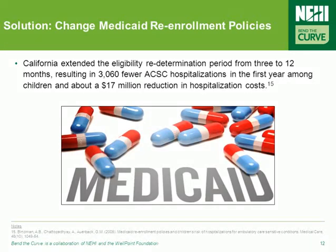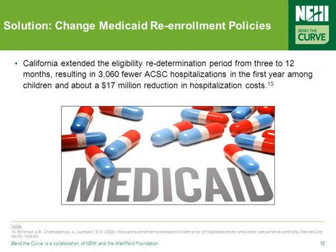A number of states have been making innovative changes to their Medicaid enrollment policies. California, for example, extended the eligibility redetermination period from 3 to 12 months, resulting in 3,060 fewer ambulatory care sensitive hospitalizations in the first year alone among children and almost a $17 million reduction in hospitalization costs.